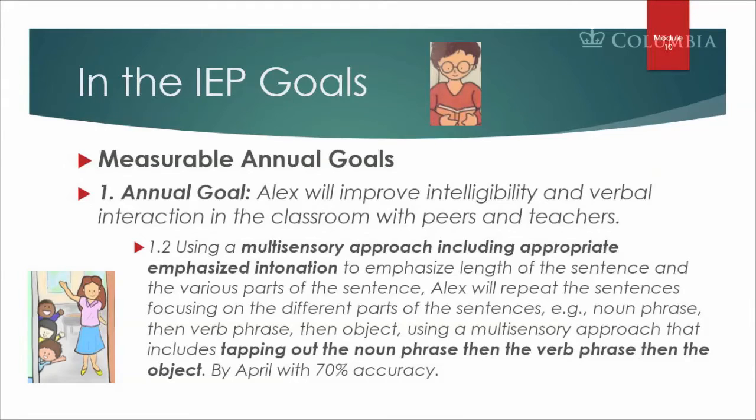We want to make sure to include a multi-sensory approach, which was helpful to him in the evaluation. If we tapped on his arm or used exaggerated intonation, or had him repeat it and we exaggerated what we were doing visually or motorically, Alex was more intelligible. He did better. We incorporate into our IEP goals strategies and supports that we found effective.